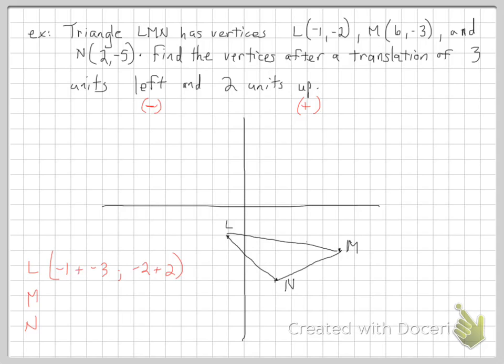Now, let's check this out. So we have 3 units left, 2 units up. So 1, 2, 3. And then 1, 2. Puts us right there, which is negative 4. L prime is negative 4, 0, which is exactly what we said it would be. So that is our L prime.